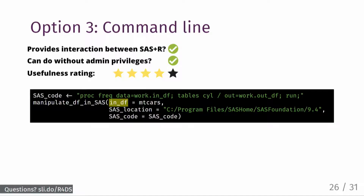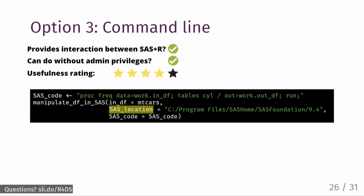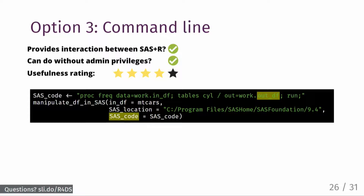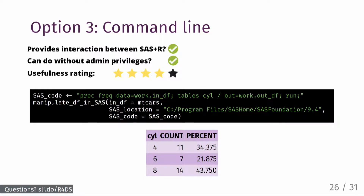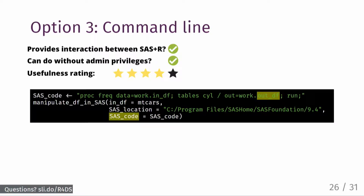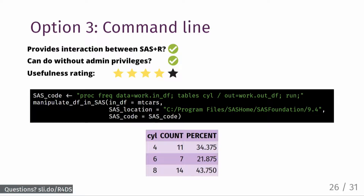The first argument this function takes is the name of the R data frame you'd like to manipulate in SAS — here I'm using the mtcars data set, which comes built into R and includes variables about car characteristics such as miles per gallon, horsepower, and cylinders. The second argument is the location to the SAS installation on your machine. The final argument is the SAS code you'd like to apply to your R data frame. The function assumes you have access in SAS to a data set called in_df, and the SAS data set sent back to the user as an R data frame is called out_df. In this example, I'm using the FREQ procedure in SAS to create a frequency table of the cylinder variable from mtcars. By executing just those two lines of code, the results from SAS are brought to the user in RStudio without ever having had to exit RStudio.